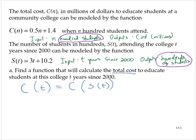Now we have some actual functions to manipulate. The C function says take 0.5 times some number and add 1.4. What's that number in this case? Well the S of t is 3t plus 10.2, and so we're going to substitute that entire function as the input in C of t.